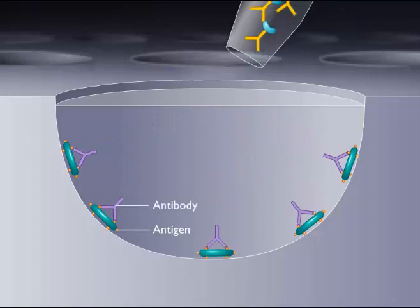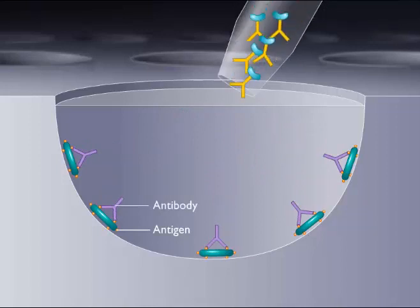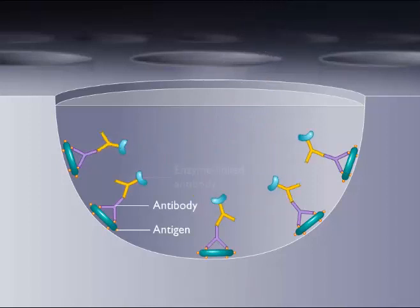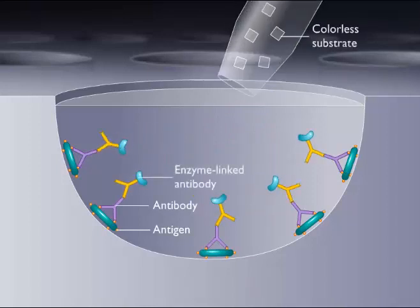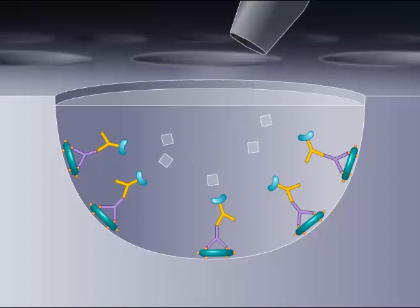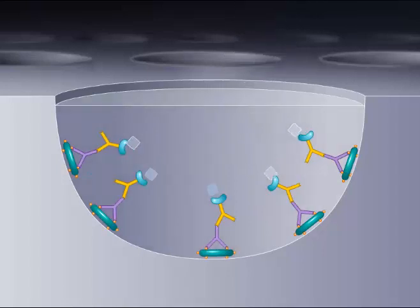Enzyme-linked antibody capable of reacting with the constant region of other antibodies is then added, followed by addition of the colorless substrate. Development of color indicates the presence of the antibody being identified.